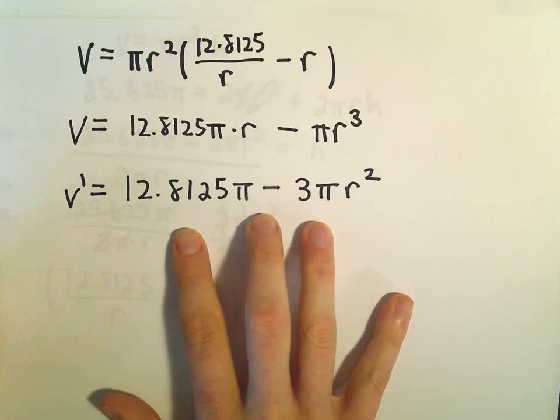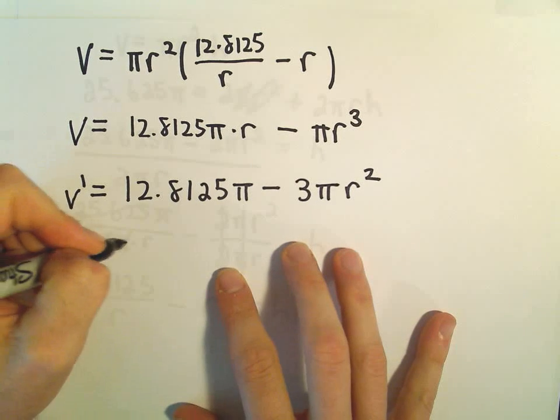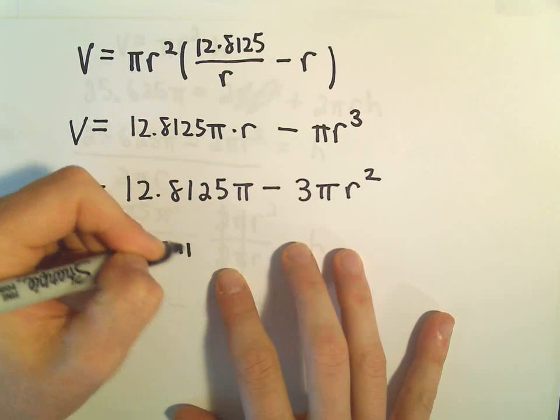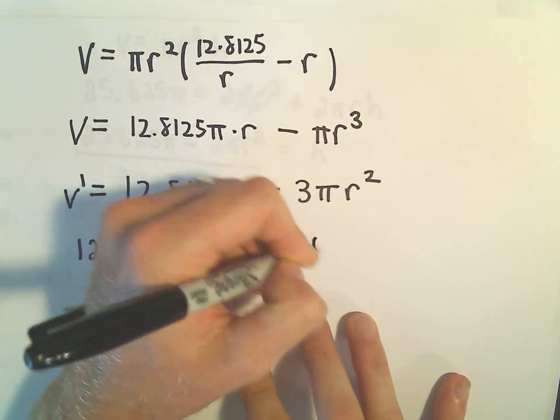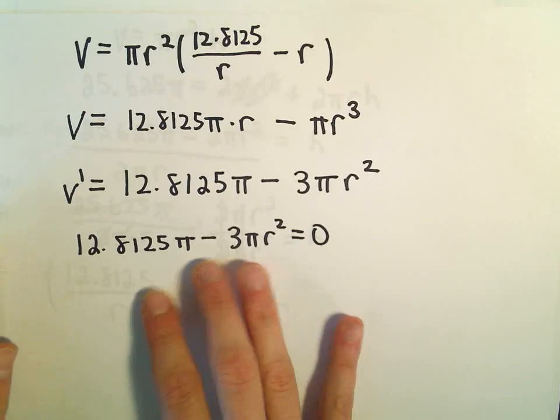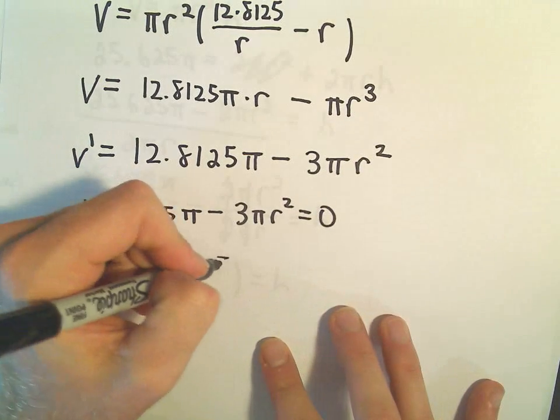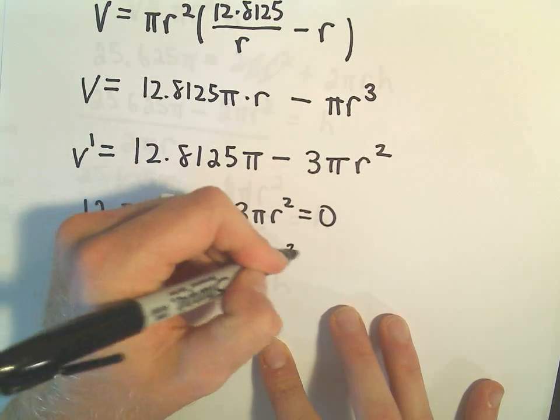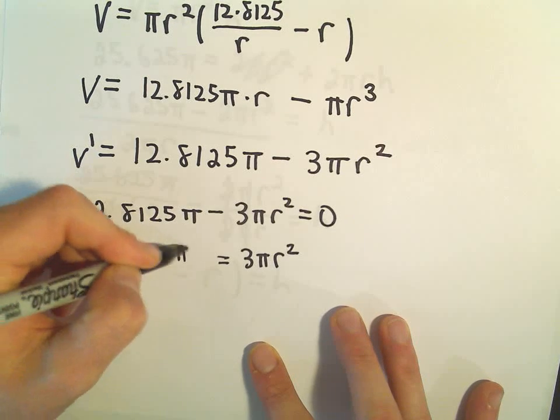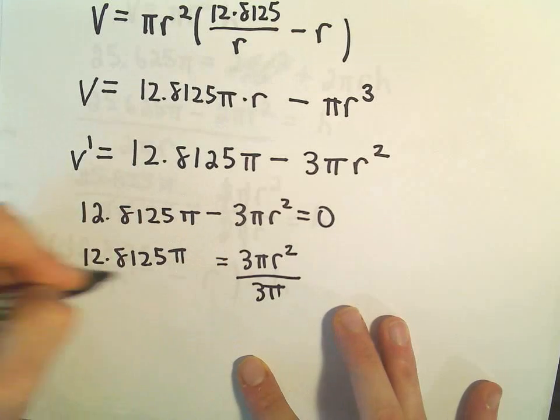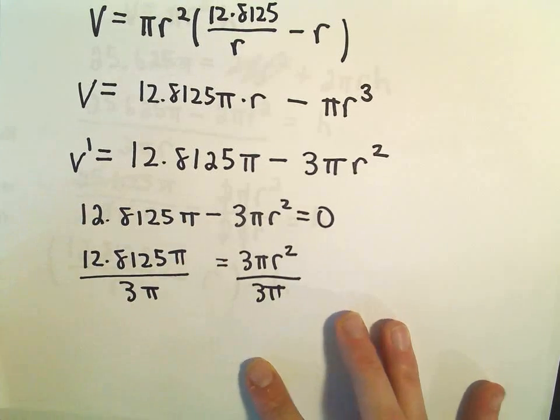Well, there's nothing that makes this equation undefined. So we'll just take it and set it equal to 0. And then we have to solve for R in this case. So we could add the 3πR² to the right side. And then we can divide both sides by 3π.